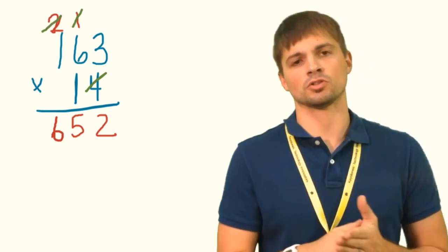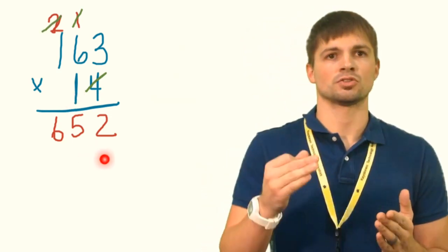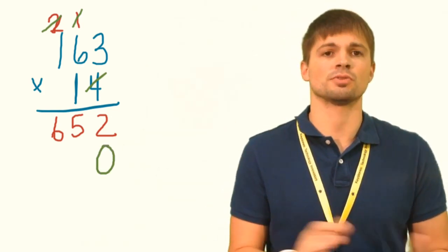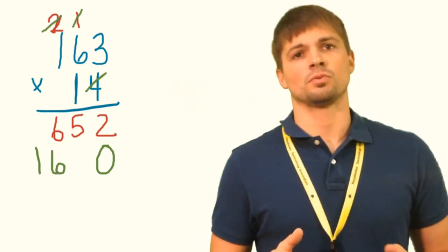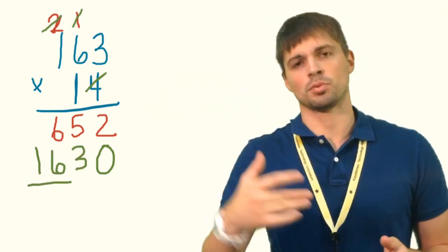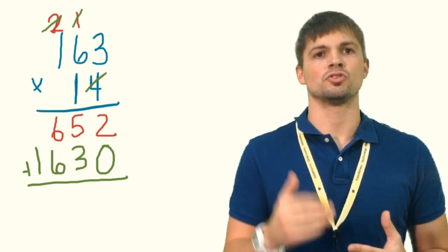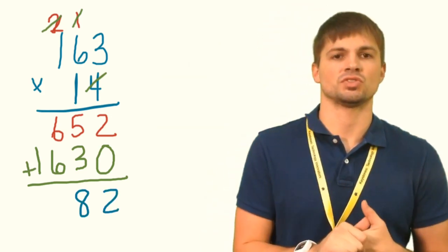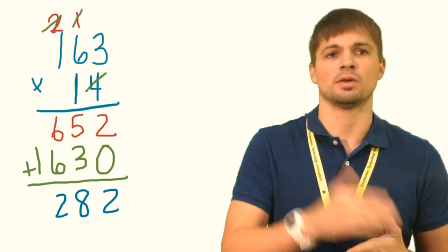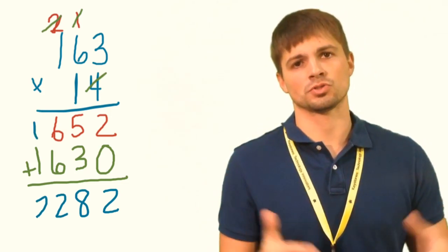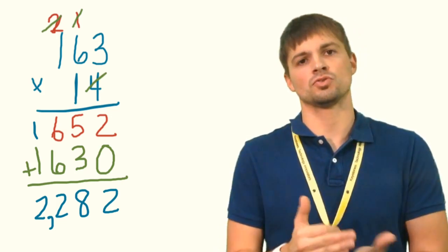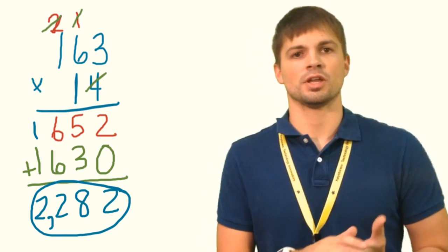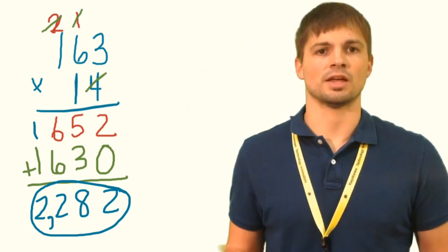We cross off the 4 and move to the tens place, which is 1. Since we're multiplying by 1 — the identity property — 1 times 163 is just 163, so we write that down as our second partial product (remembering the placeholder zero makes it 1630). Adding the partial products: 2 plus 0 is 2, 5 plus 3 is 8, 6 plus 6 is 12 — carry the 1 — and 1 plus 2 is 3... giving a total product of 2282. The charity collected 2282 cans in the two-week period.